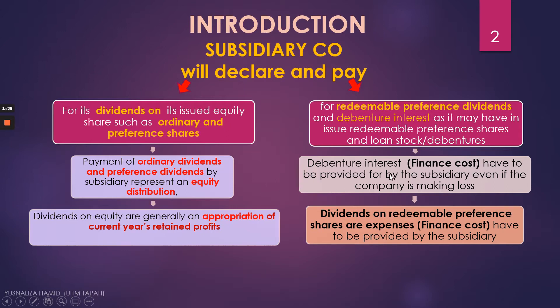The debenture interest is actually a finance cost, so it has to be provided in the statement of profit or loss, even if the company is making a loss. For the dividends on redeemable preference shares, they are also expenses. Similar to the debenture interest, it is also part of the finance costs, which also needs to be provided by the subsidiary company.